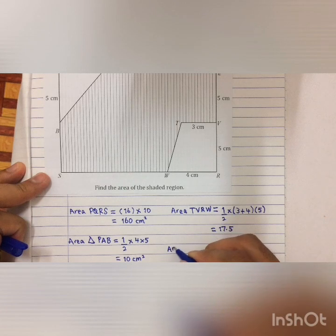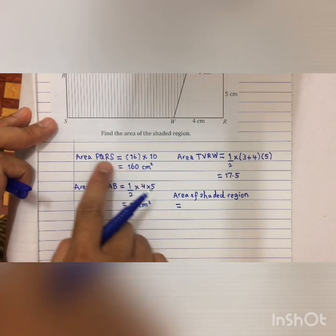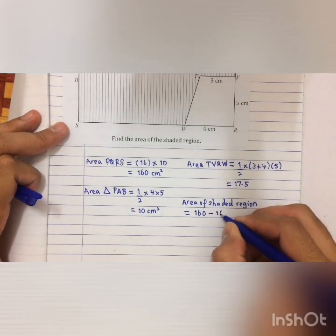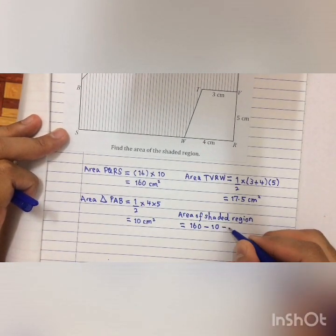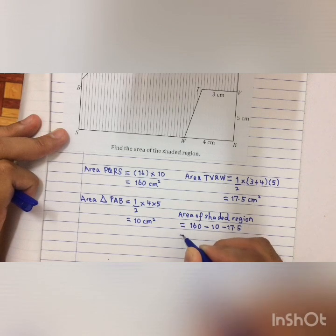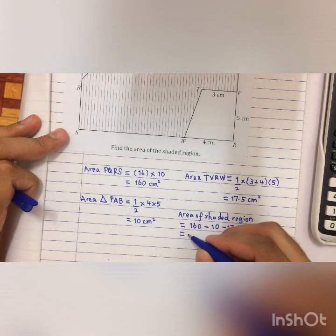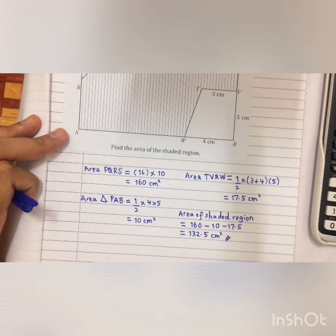So the area of the shaded region equals the big rectangle PQRS (160 cm²) minus the triangle area (10 cm²) minus the trapezium area (17.5 cm²). So the final answer is 160 − 10 − 17.5 = 132.5 cm².